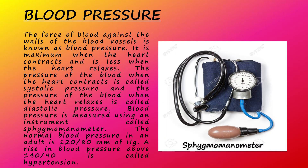Blood pressure: the force of blood against the walls of the blood vessels is known as blood pressure. It is maximum when the heart contracts and less when the heart relaxes. The pressure when the heart contracts is called systolic pressure, and when it relaxes is called diastolic pressure. Blood pressure is measured using an instrument called sphygmomanometer. The normal blood pressure in an adult is 120/80 mmHg. A rise in blood pressure above 140/90 is called hypertension.